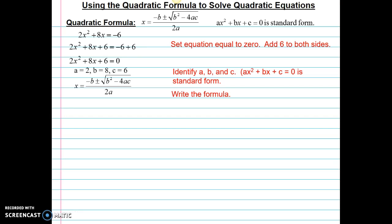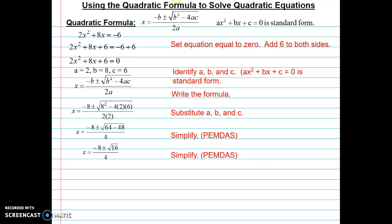Next, I'll substitute the values in for the formula. And from here on out, I will simplify that formula. So here, 8 squared is 64. 4 times 2 times 6 is 48. Subtract 64 minus 48. I get 16.